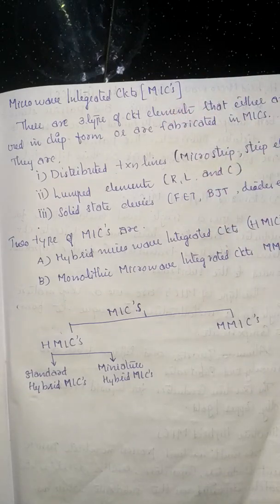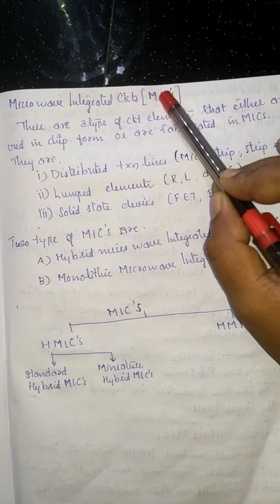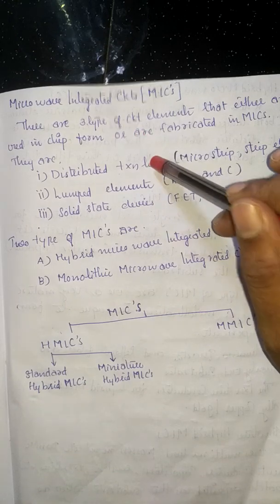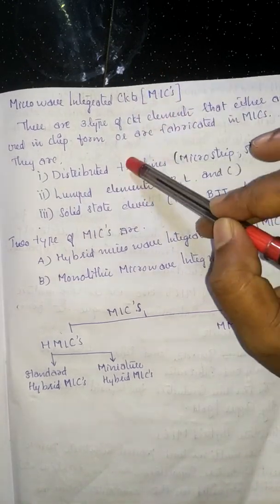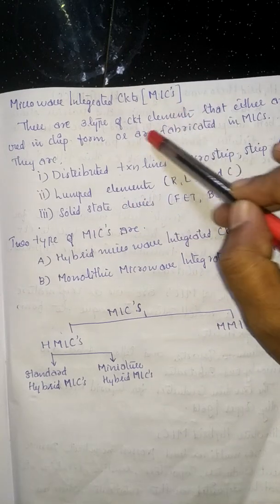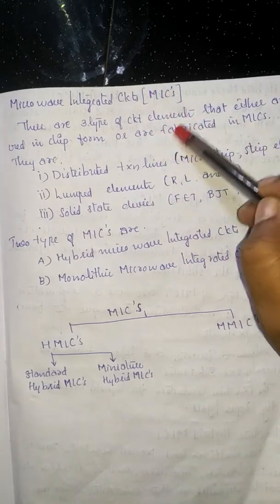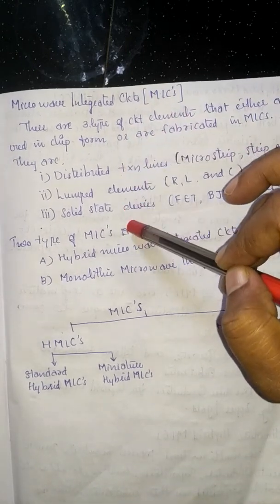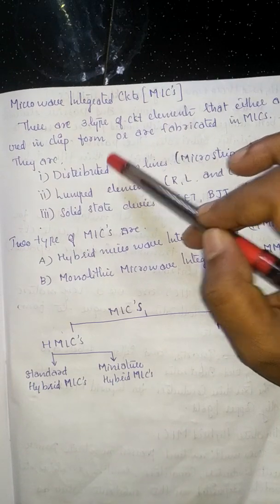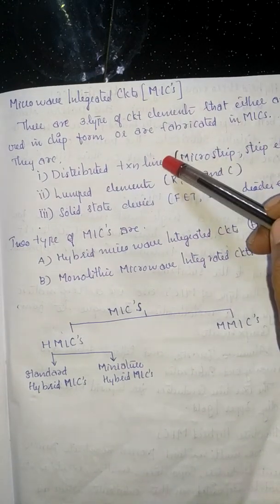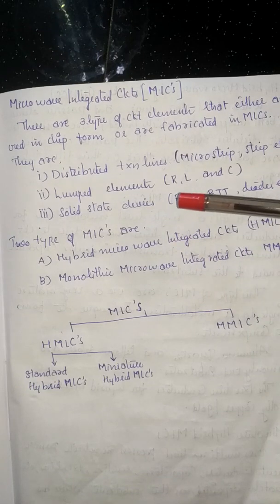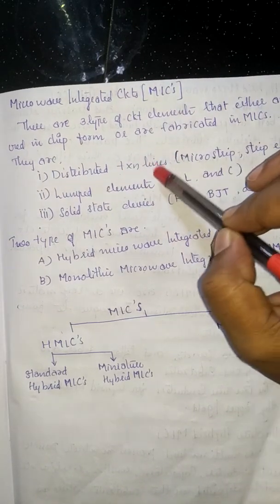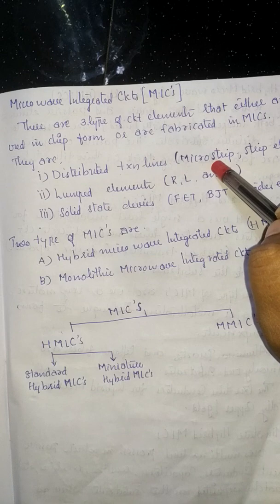Within a single chip of MICs, there are basically three elements: the first one is distributed transmission line, the second one is lumped elements, and the third one is solid-state devices.